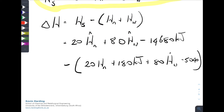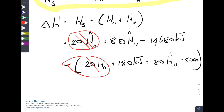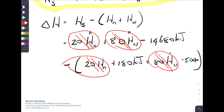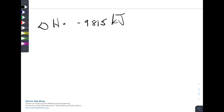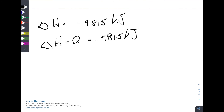The 20h°_NaOH terms cancel, and the 80h°_water terms cancel, leaving only the numerical values. The final result is ΔH = −9,815 kJ. Since ΔH = Q, the heat required is Q = −9,815 kJ. The negative sign means cooling is required. Even though the target temperature of 55°C is higher than one of the initial temperatures, the overall system still needs to be cooled due to the exothermic enthalpy of mixing.